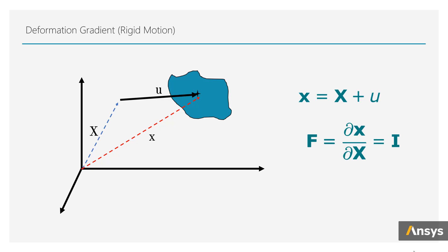If this was not a rigid body motion, and instead there are portions of the body that are stretching, in that case, the vector small x is no longer a linear function of capital X, which means that the deformation gradient is not an identity tensor.